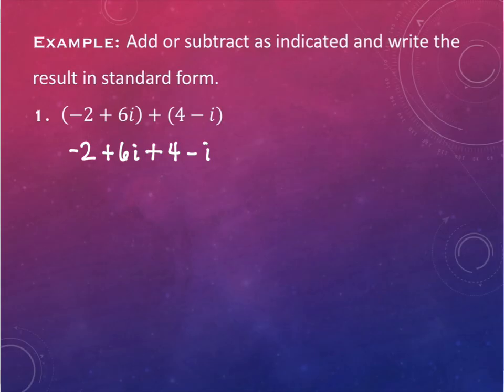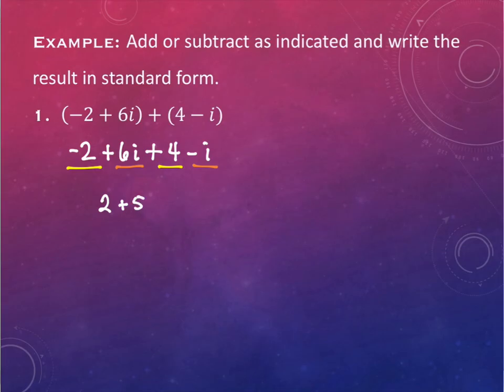We're going to combine the numbers that are real numbers together and the numbers that are imaginary numbers together. The real number parts are the parts that don't have i's. So you have negative 2 and positive 4, which gives you 2. And then the imaginary parts are the parts that do have the i's. So we have 6i and negative i, which gives me 5i. Just like with x's — absolutely no difference at all. Combine like terms.